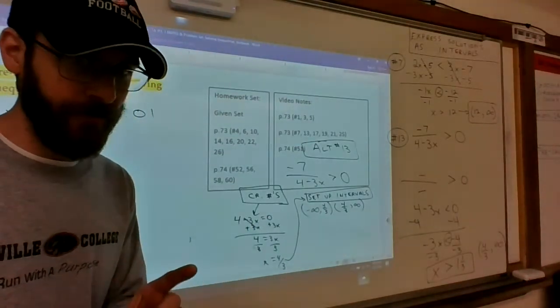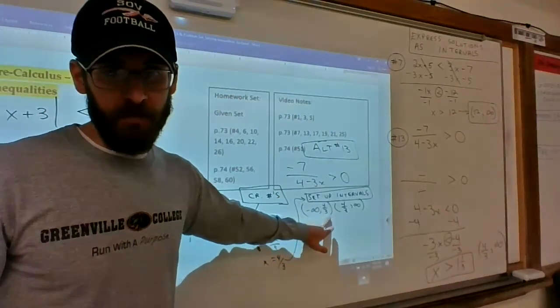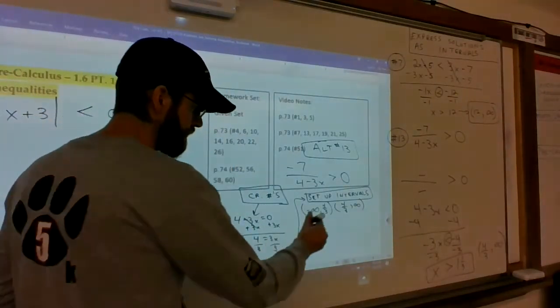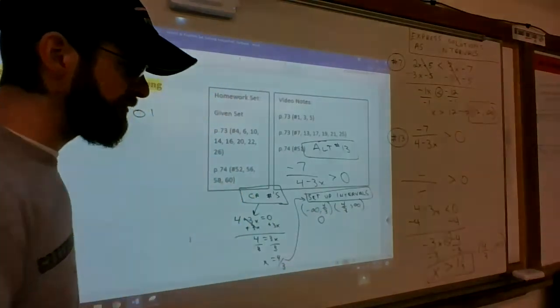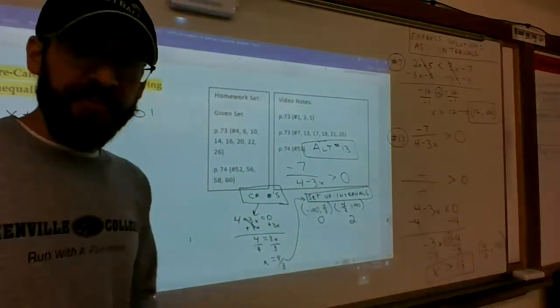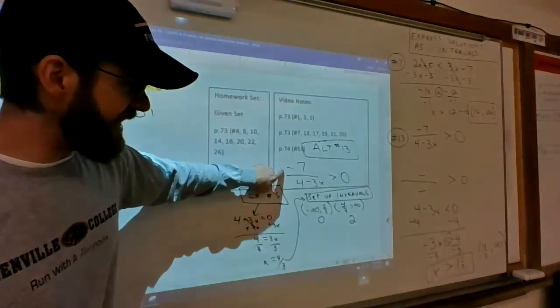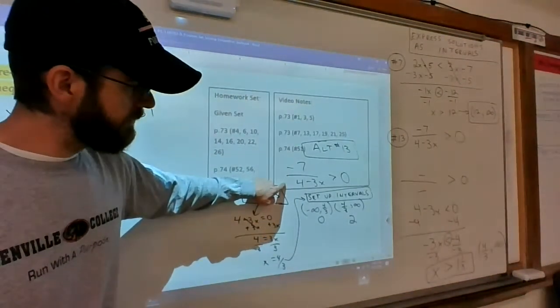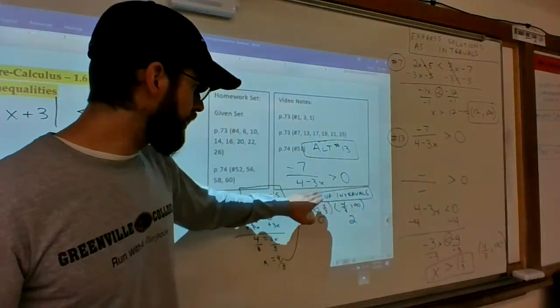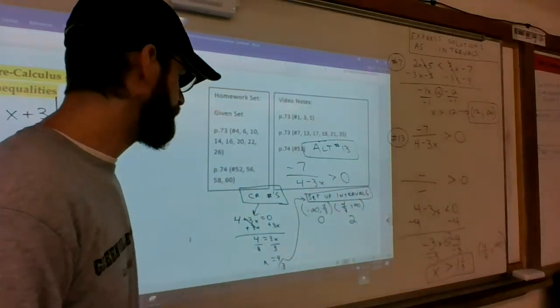Now you test the intervals by picking a random number between negative infinity and 4/3. Zero's an easy one. And for 4/3 to infinity, we can pick something like 2. Then you plug that test point into the left-hand side of the equation. If it yields a positive number, you're greater than zero and it checks out. If you're less than zero, then it doesn't check out and that solution doesn't work.